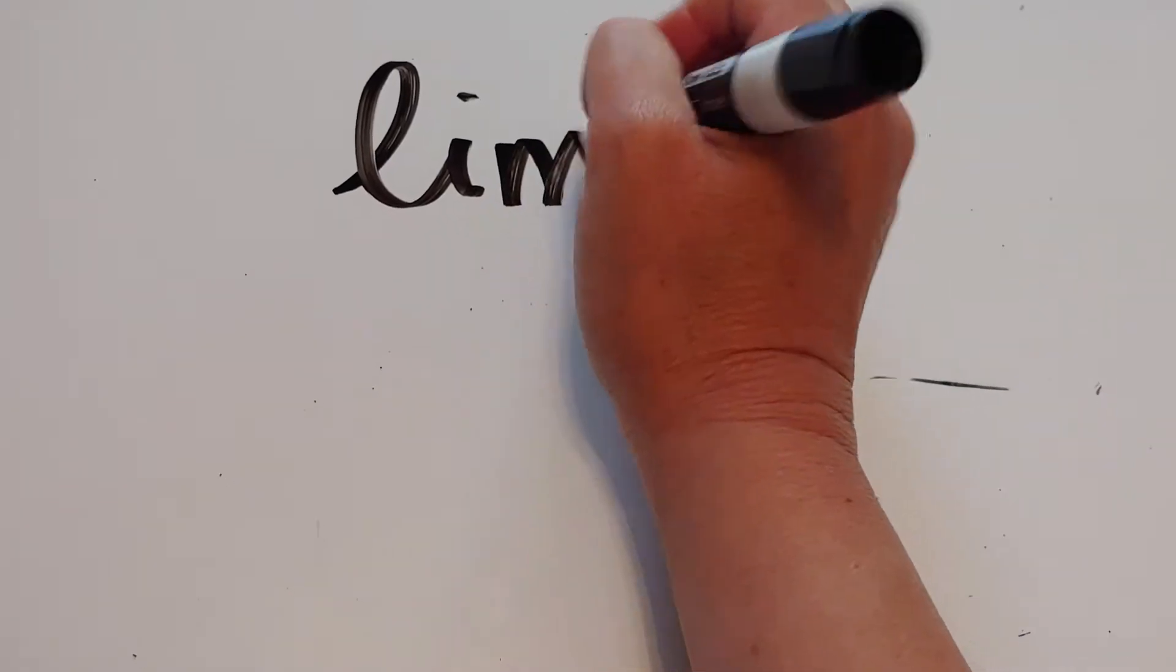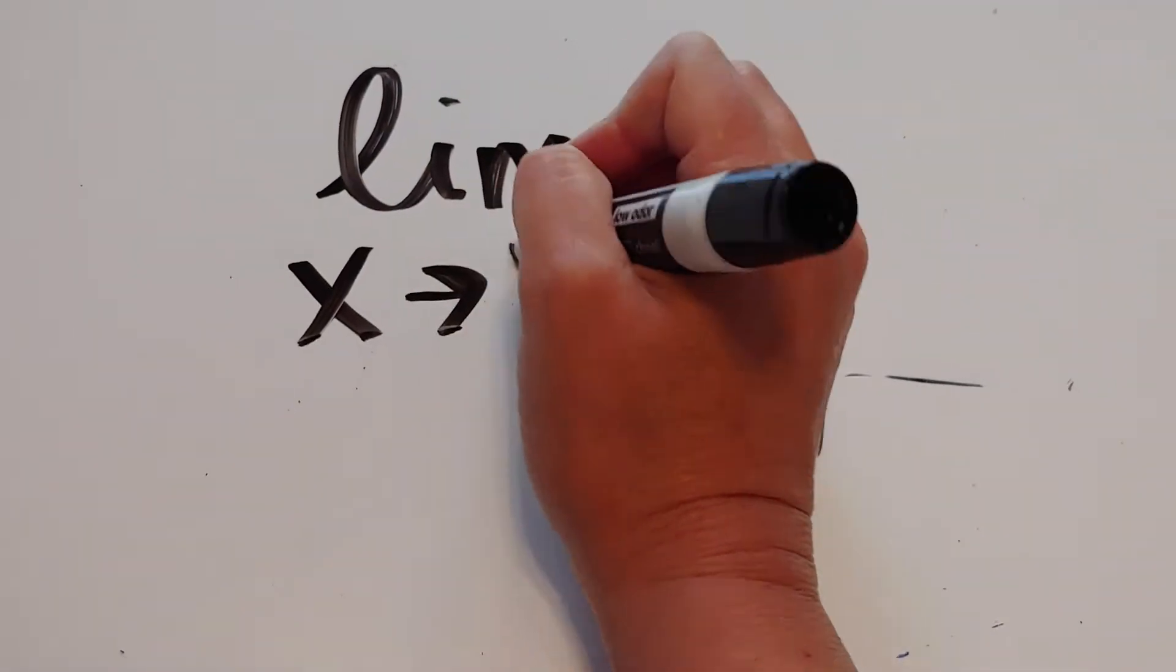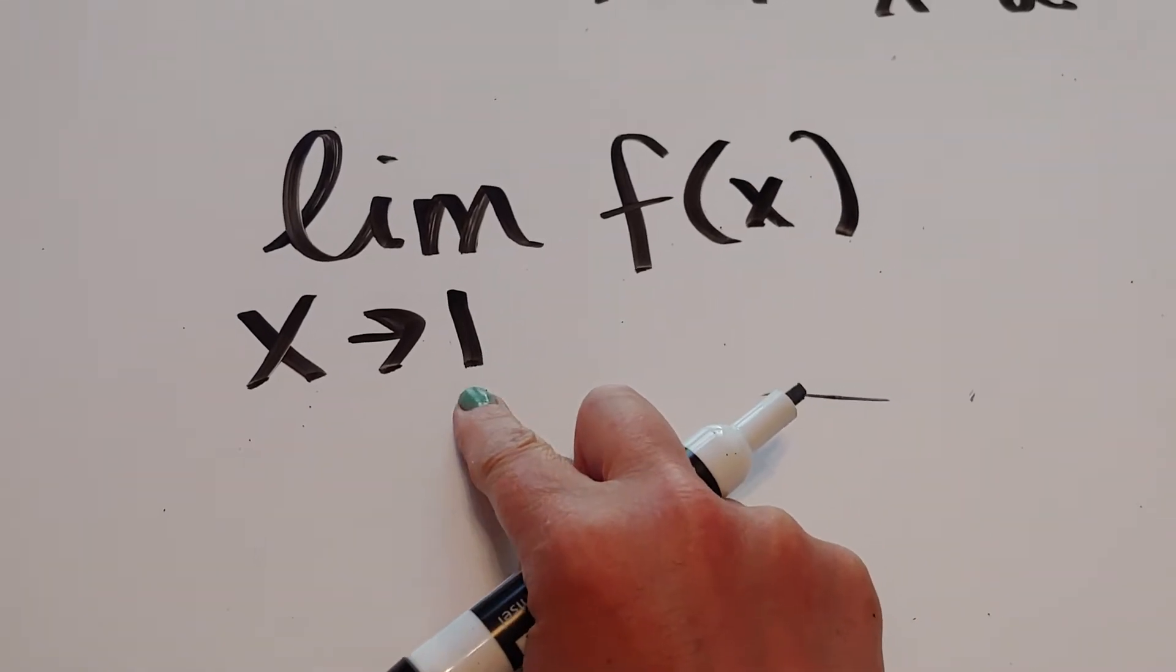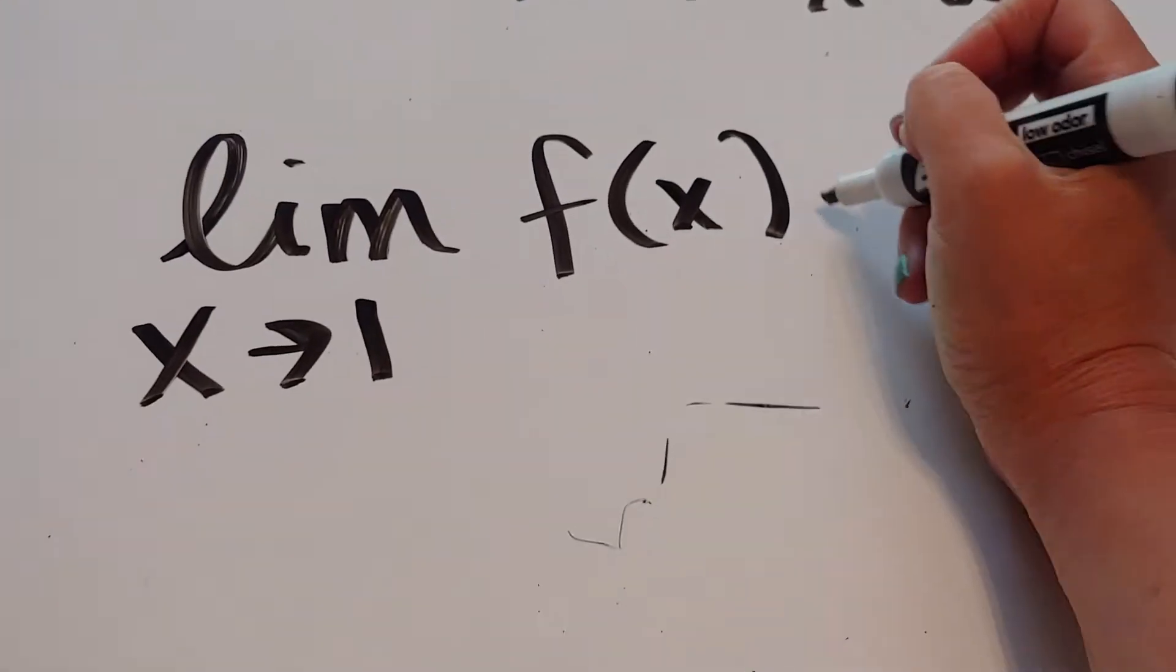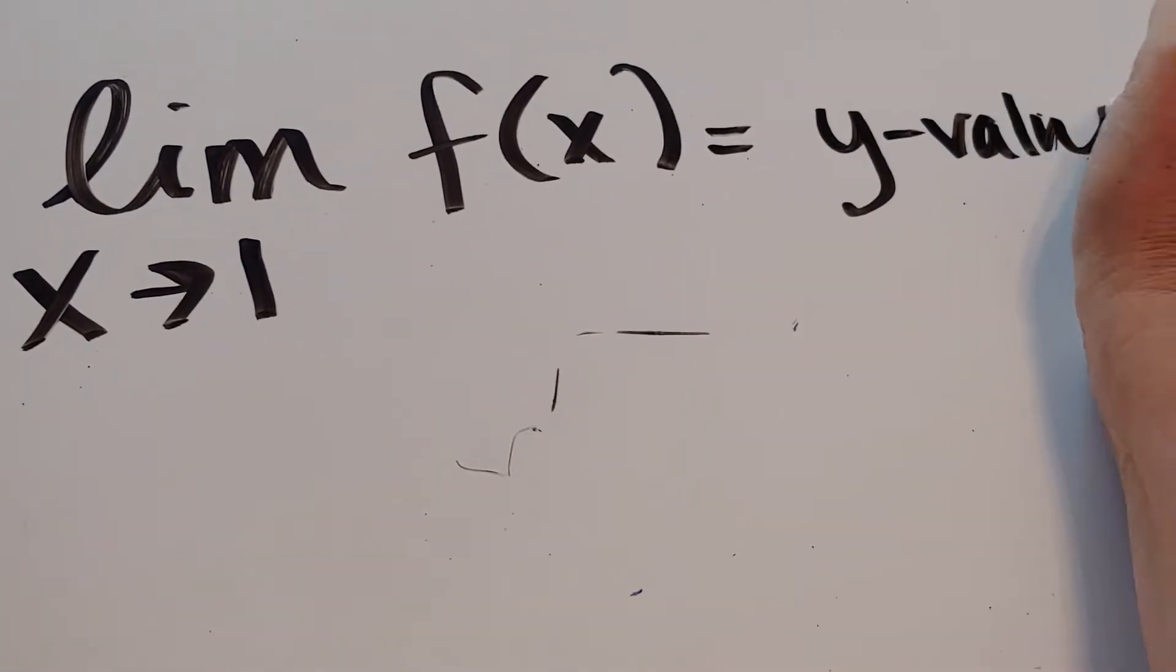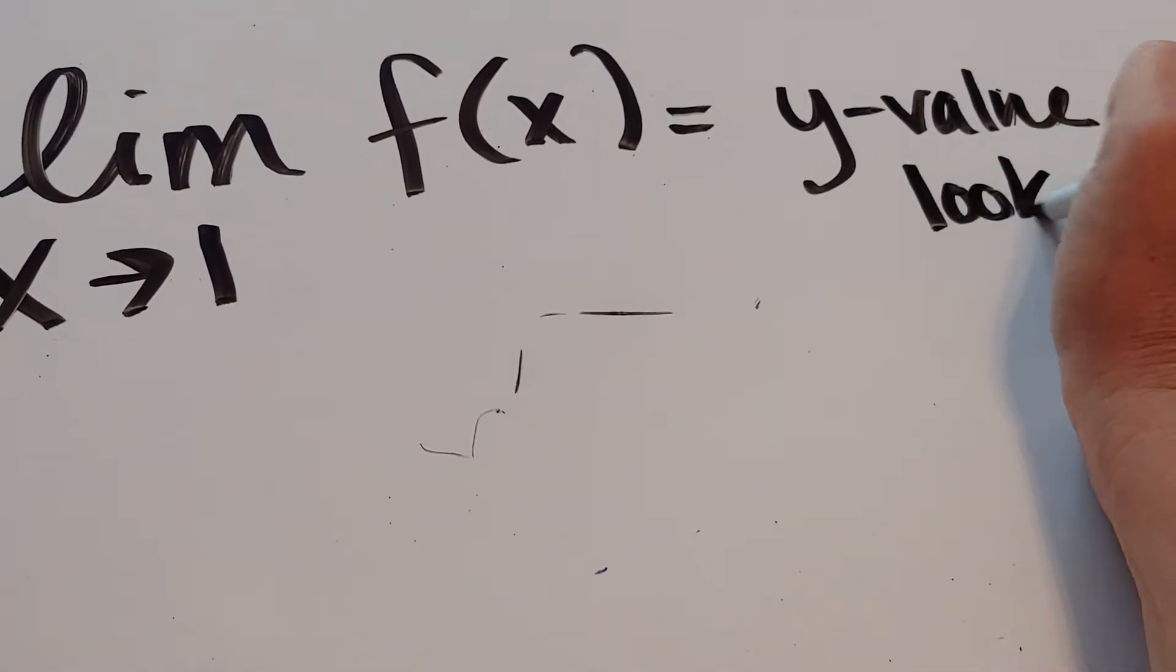if we had something like the limit as x approaches 1 of f of x, what this is asking you to do is to walk near x is 1 on this graph, and I want to know, what does the y value look like? Notice I say look like.